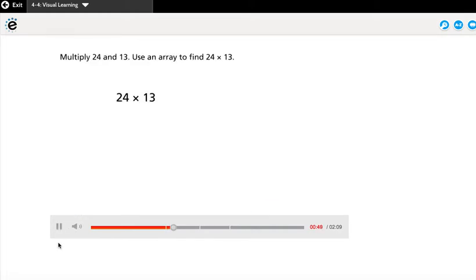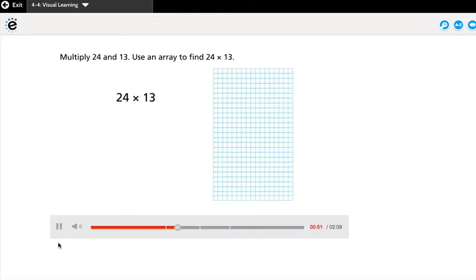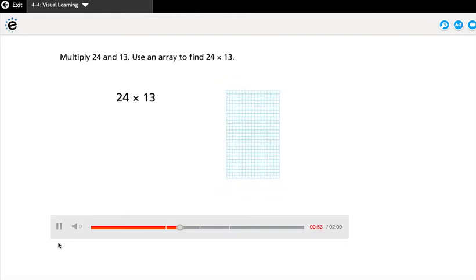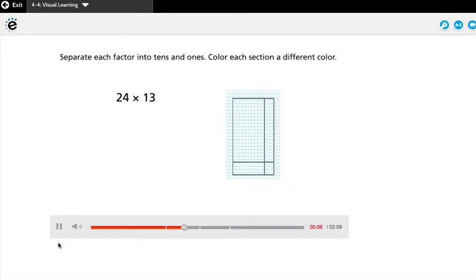Multiply 24 and 13. Use an array to find 24 times 13. Separate each factor into tens and ones. Color each section a different color.